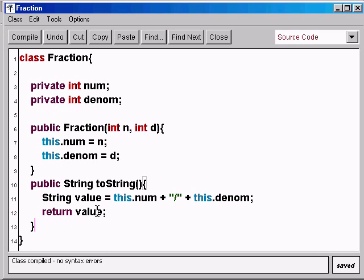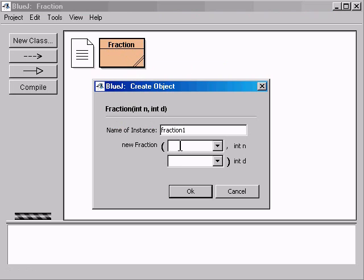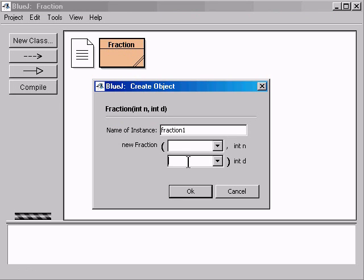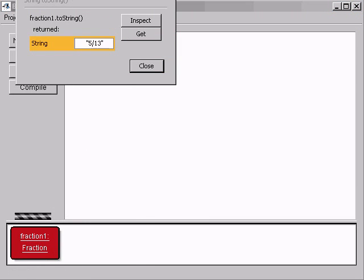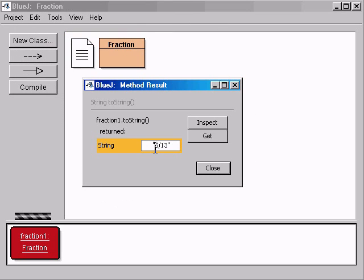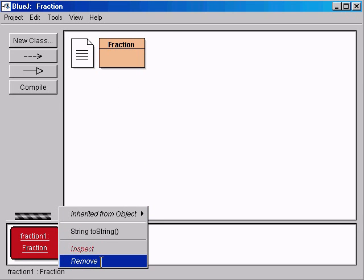Now we can compile it. It should work. And again, this is the numerator, the denominator. Let's test our little fraction. Make a fraction called, let's make 5 thirteenths. And then here we call the toString object, and the return value is 5 over 13. So it returned it as a string. It did what we wanted to.